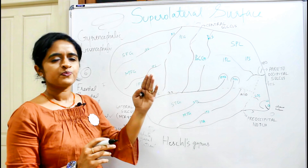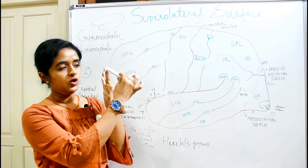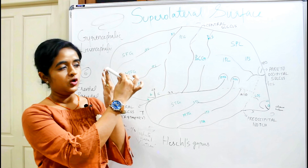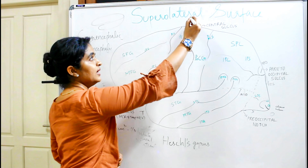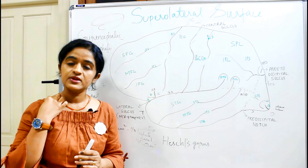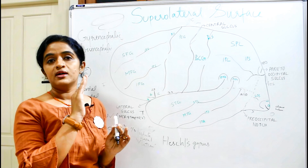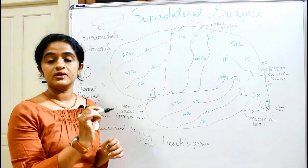The central sulcus makes an angle of 70 degrees with the median sagittal plane, running down and anteriorly from the superomedial border. To summarize: look for the longest sulcus on the superolateral surface; if it extends to the medial aspect, that is the central sulcus. Its position is one centimeter behind the midpoint between the frontal and occipital poles.